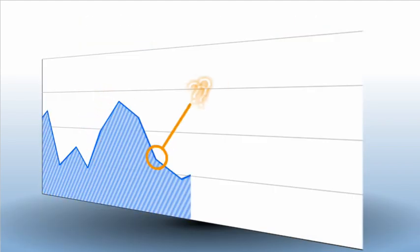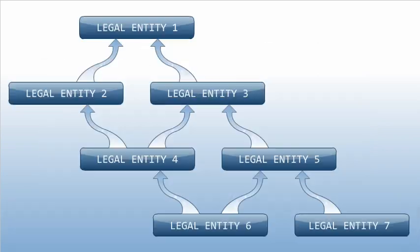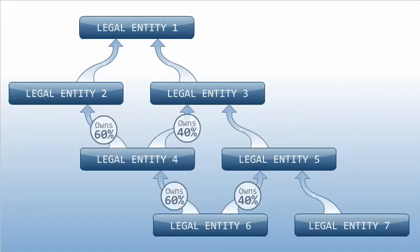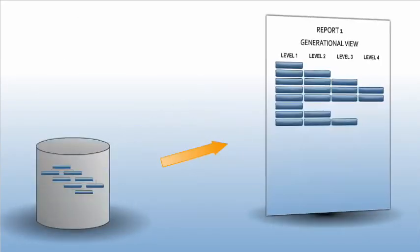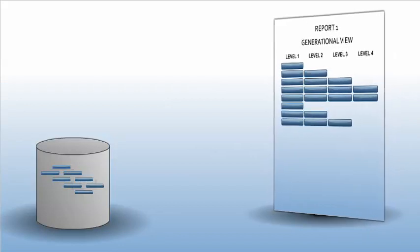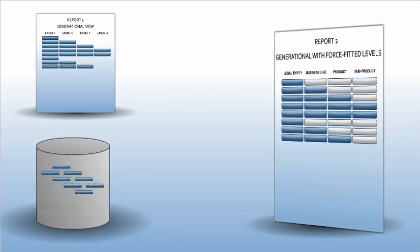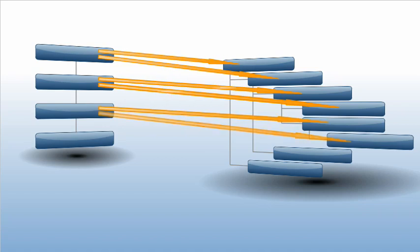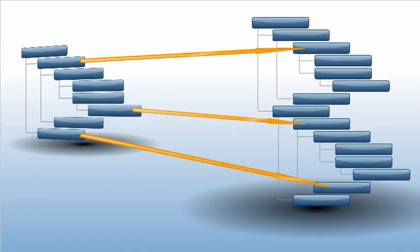Hierarchies can become increasingly complex as business requirements evolve, such as ownership hierarchies, hybrid hierarchies with different views for management and reporting, and cross-linked hierarchies — imagine mapping two moving parts.